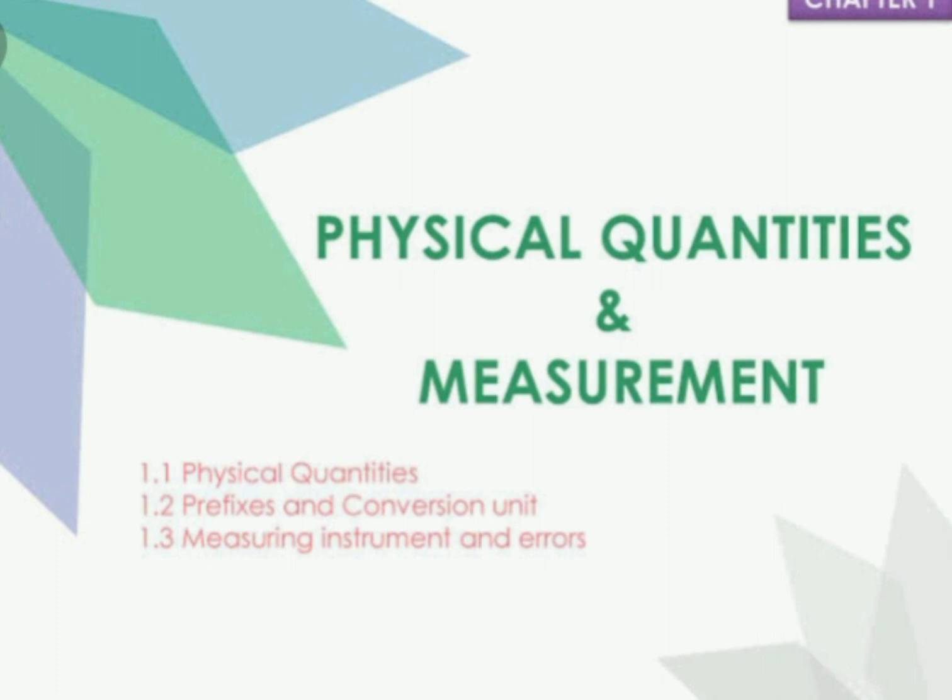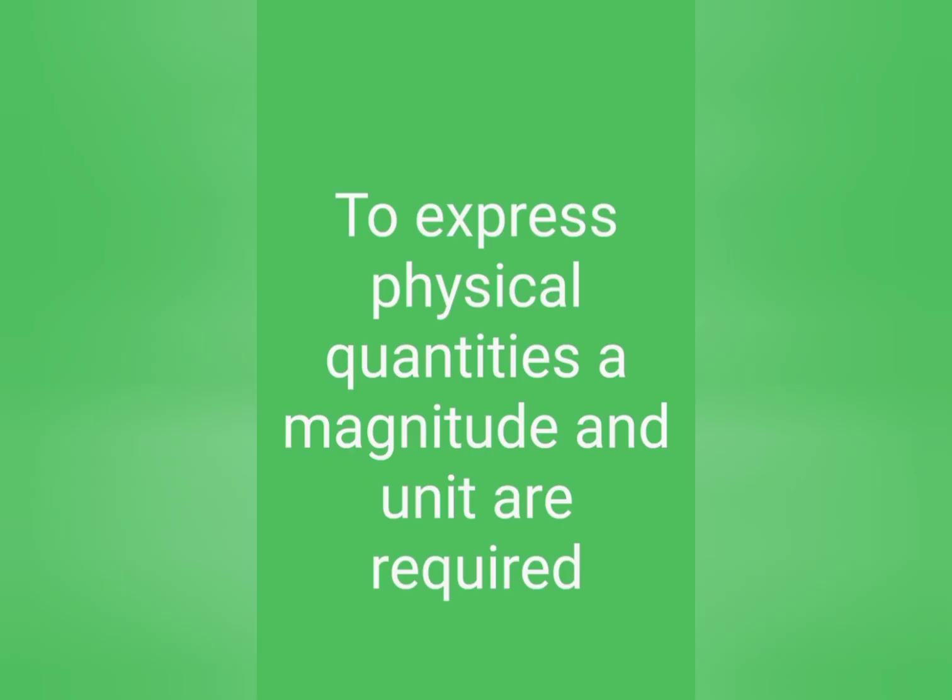What is a physical quantity? A physical quantity is a quantity that can be measured like area, volume, density, and speed. How will we measure physical quantities? To measure a physical quantity we require two things: first is magnitude and second is unit.